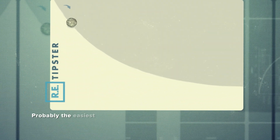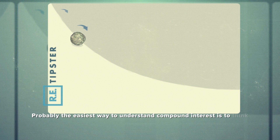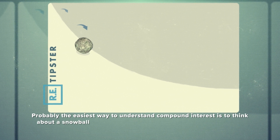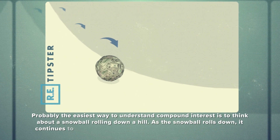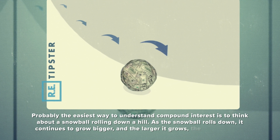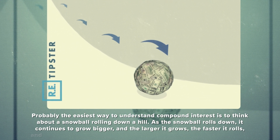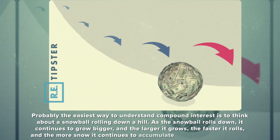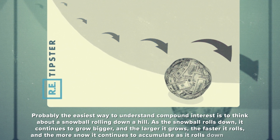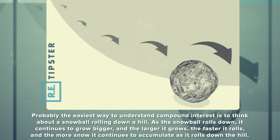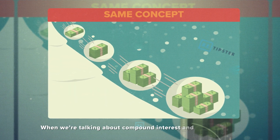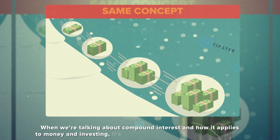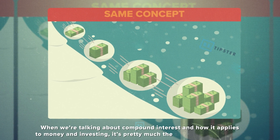Probably the easiest way to understand compound interest is to think about a snowball rolling down a hill. As the snowball rolls down, it continues to grow bigger, and the larger it grows, the faster it rolls, and the more snow it continues to accumulate as it rolls down the hill. When we're talking about compound interest and how it applies to money and investing, it's pretty much the same concept at work.